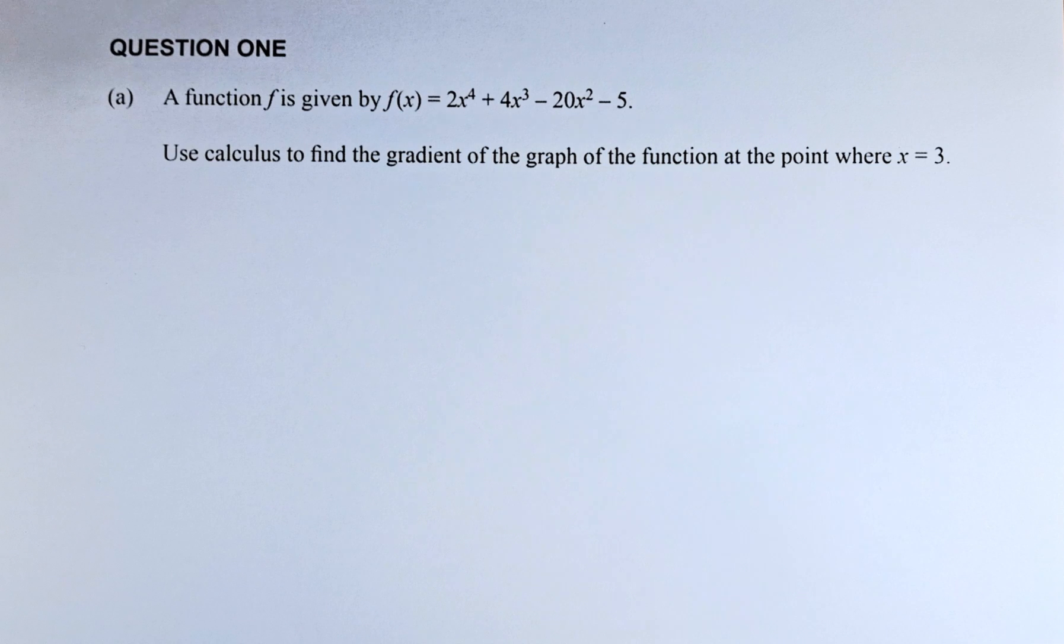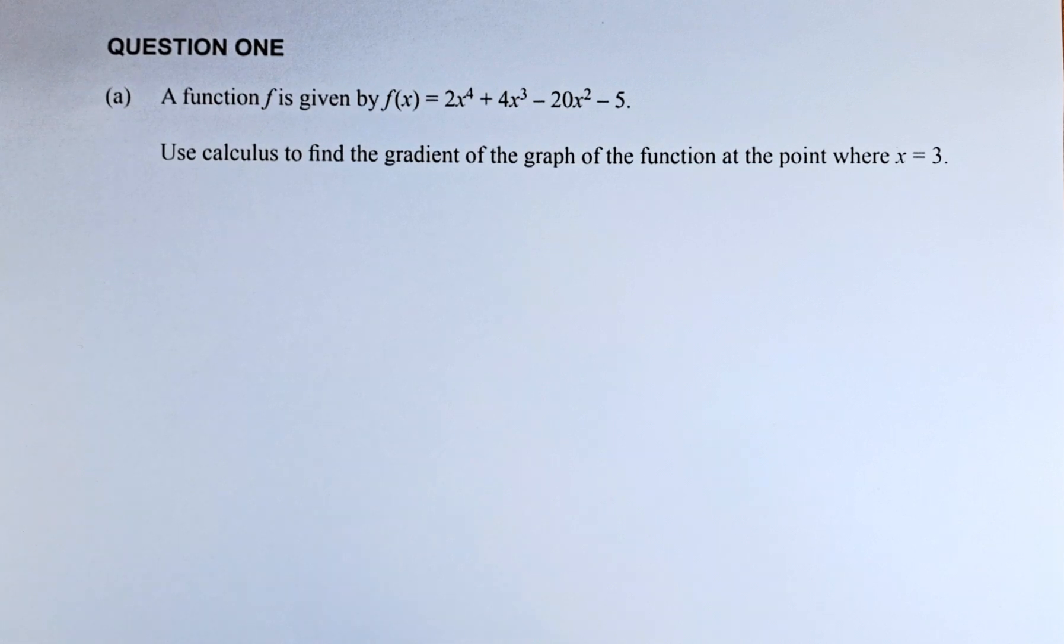The question reads: A function f is given by f(x) equal to 2x to the power of 4 plus 4x cubed minus 20x squared minus 5. Use calculus to find the gradient of the graph of the function at the point where x equals 3.